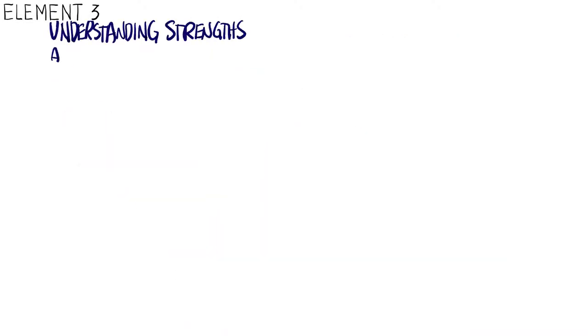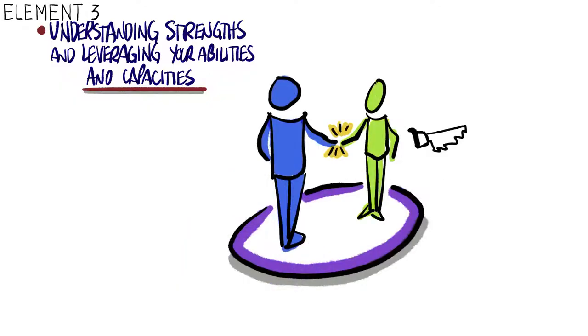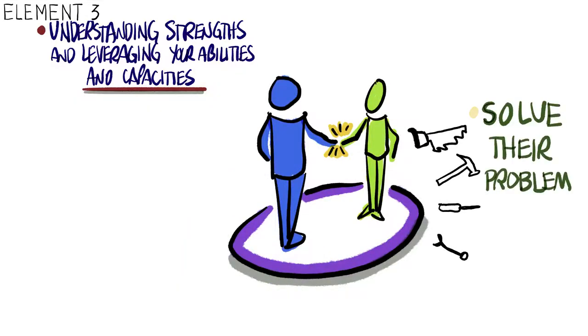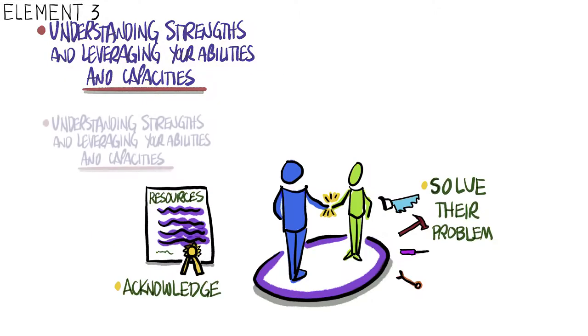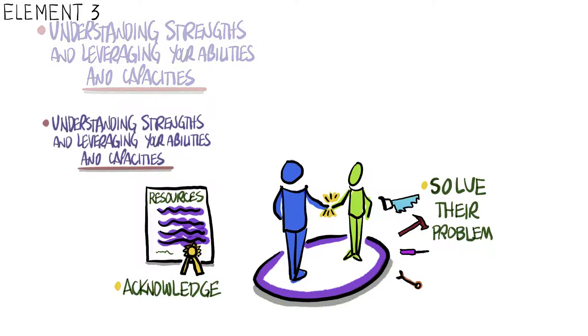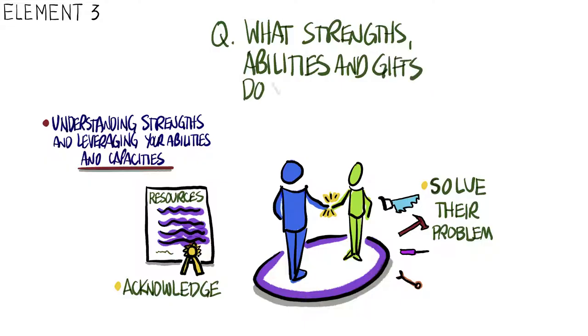Understanding strengths and leveraging your abilities and capacities is element three. Once you have established trust, it's easier to get people to realize what tools they already have to solve their problem. Helping them list and acknowledge those resources can allay fears and give them confidence. You may want to ask, what strengths, abilities, and gifts do you bring to the situation?